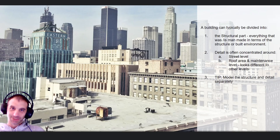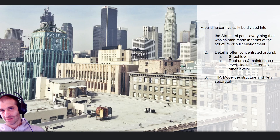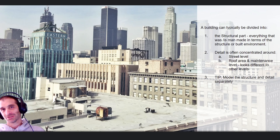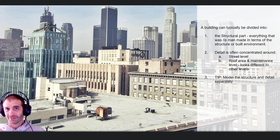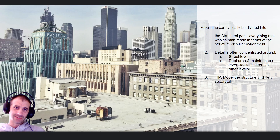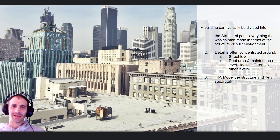This is a conversation about building — it feels like it's not important and it's entirely outside of 3D, but it is one of those very small topics that is crucial to realism. When it comes to looking at a building, a building can be divided into two main things: the structure — the built environment, all the walls, the concrete, everything that is man-made.